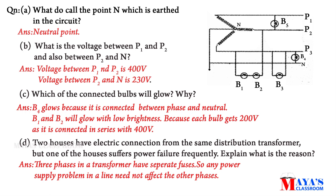Looking at the distribution line, there are 4 lines: 3 phase lines and one neutral line. The supply is from 3 phase lines. If there is a fault in one phase line, it does not affect the other phases. So if one house is connected to a faulty phase, it will have power failure frequently without affecting the other house.